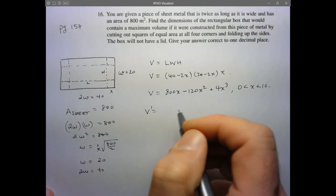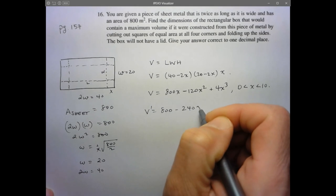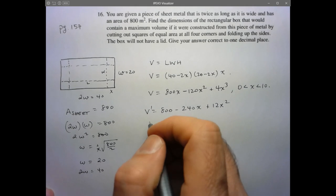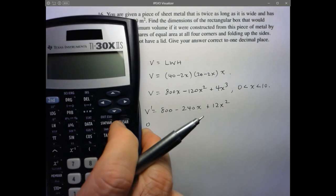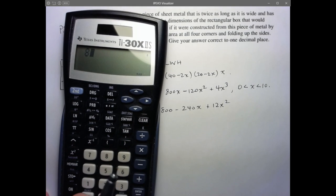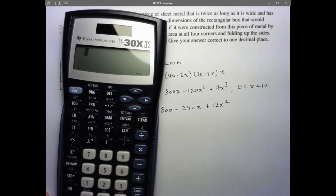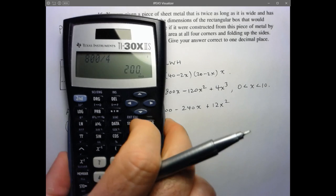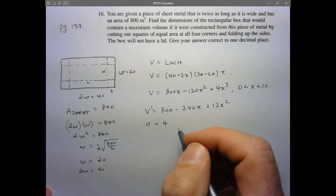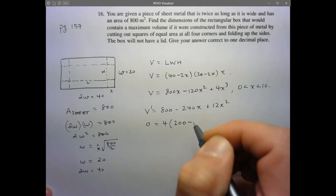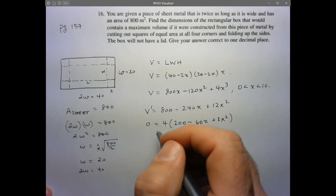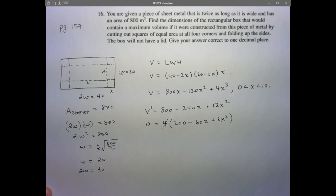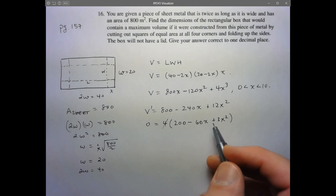Now we have our model in terms of one variable. We have our domain. Now we can start doing some calculus. So v prime is equal to 800. And this is going to be minus 240x. And this is going to be plus 12x squared. And we want to solve this equal to 0. I know 240 is going to be divisible by 12. 800 divided by 4. I know that's going to be divisible by 4. So I'm going to factor out a 4 here. So what are we left with? 200. Minus 240 divided by 4 is just going to be 60x. And then plus 3x squared. I'm just going to divide both sides by 4. So I'll still have the 0 on the other side.